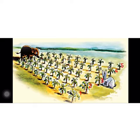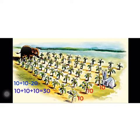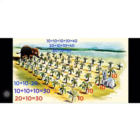1, 2, 3, 4, 5. Five rows. First row is how many banana trees? Yes, 10. And then second row is 10. 10 plus 10 is equal to 20. Third row is 10 trees. 10 plus 10 plus 10 is equal to 30. 20 plus 10 is equal to 30 banana trees.